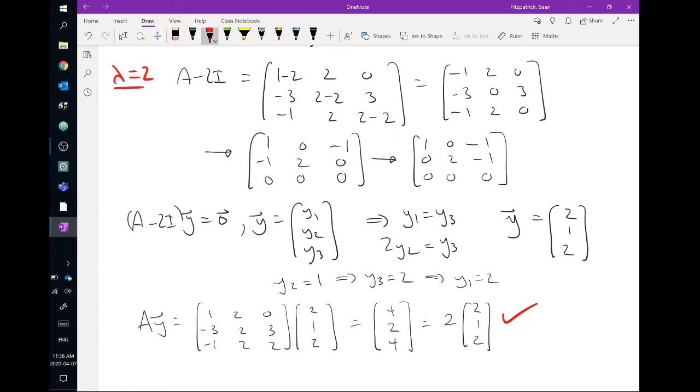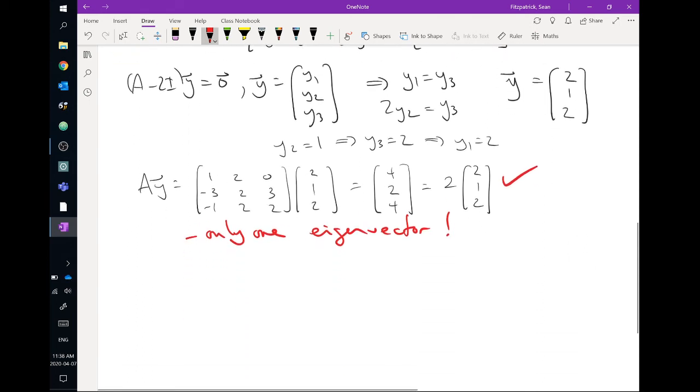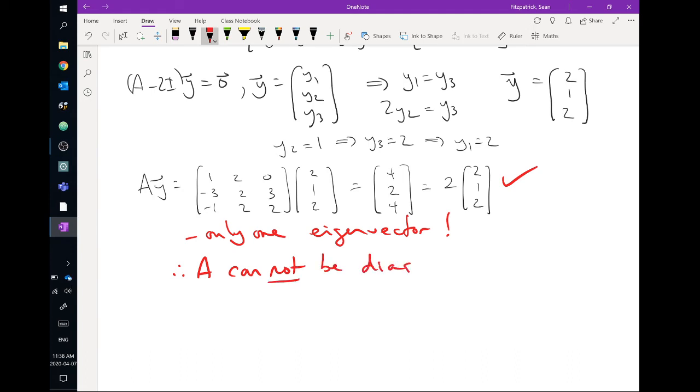But here's the thing. Notice that we only get one eigenvector, right? Up to scalar multiple. We don't get two independent eigenvectors here. We only get one. All other eigenvectors corresponding to lambda equals 2 have to be scalar multiples of the one that we have. So that's the best we can do. There's just the one. So this would be a case where this matrix A cannot be diagonalized. Because there's only one eigenvector, of course, one of that eigenvalue of 2. And for Math 1410, that's sort of where the story ends.